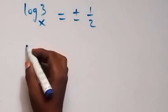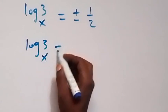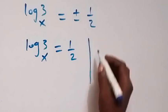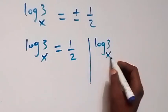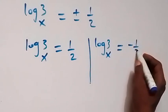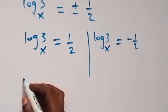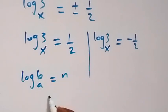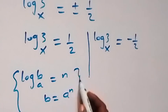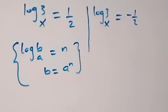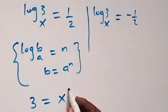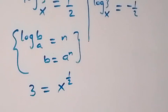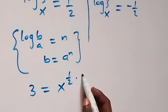This gives two cases. The first case: log 3 base x equals 1/2. The second case: log 3 base x equals minus 1/2.